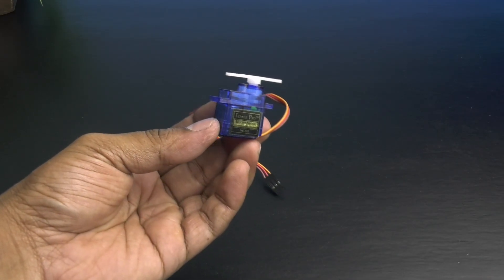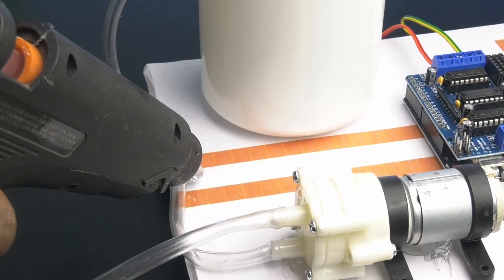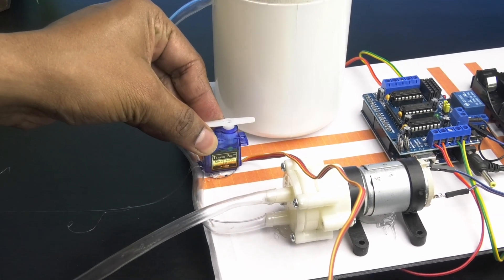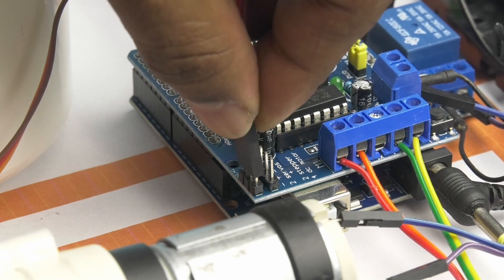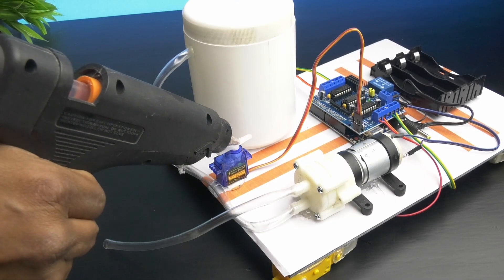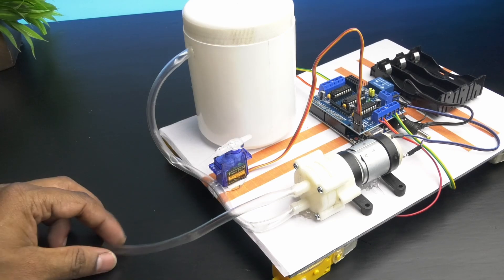Next, take a servo motor and fix it in the front side and connect its connector in servo 1 pin header of the motor driver shield. And then fix the outlet pipe over the servo motor arm.